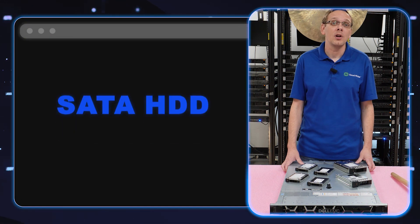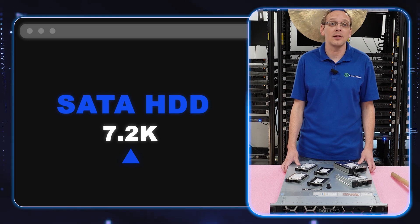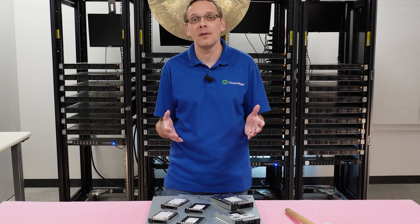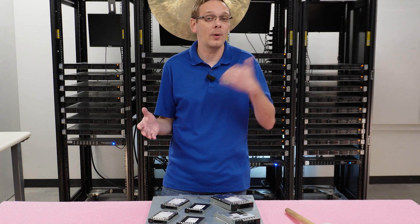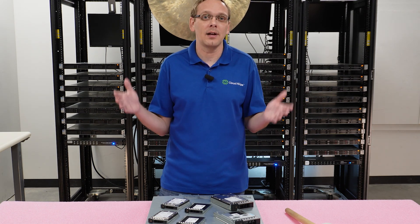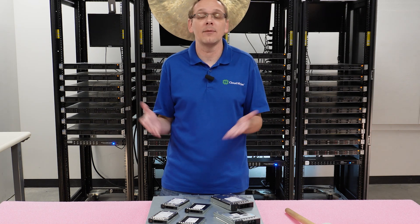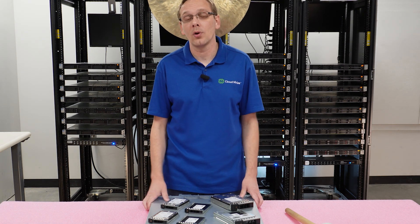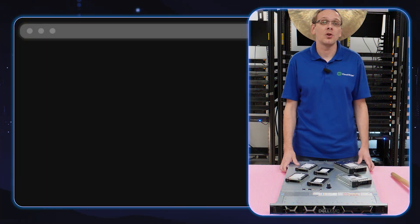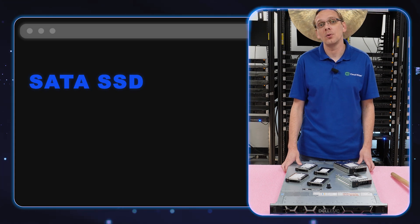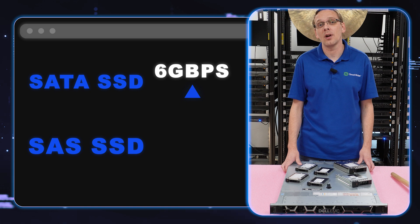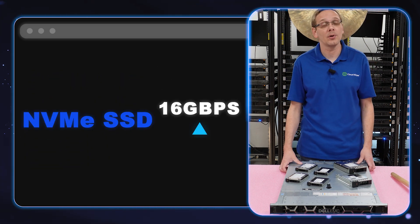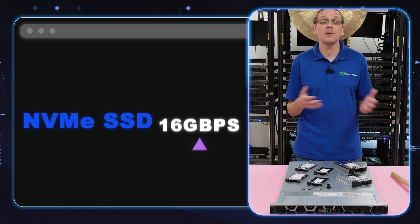Within SATA hard drives, the speed is going to be 7.2k — that's the predominant speed. There are some others for the surveillance industry at 5400, and technically the old Raptor drives at 10k, but 99% of SATA out there is 7.2k. With solid state drives, speeds are based on gigabytes per second. A SATA SSD can get up to 6 GB/s, a SAS SSD up to 12 GB/s, and NVMe is the real winner at 16 GB/s.